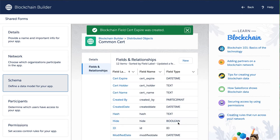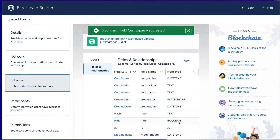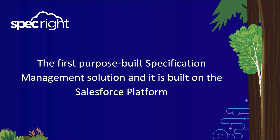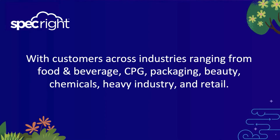I'm going to show you a demo of three Salesforce orgs based on an amazing AppExchange Partners project. SpecRite is the first purpose-built platform for specification management. SpecRite's customers need to share specifications — or specs — with other companies and across many different orgs, but they all need to take their own actions based on this shared data.